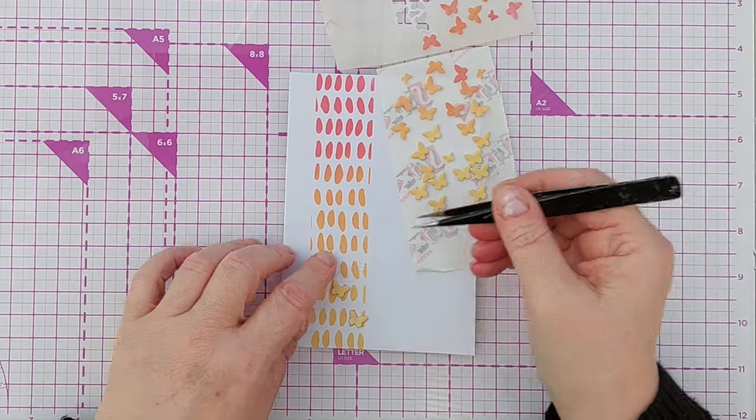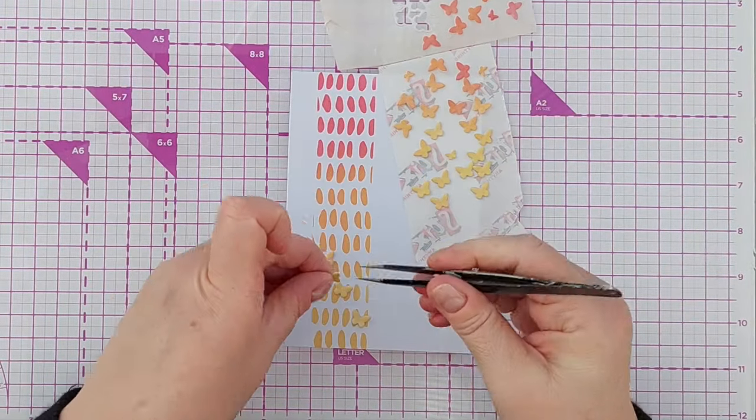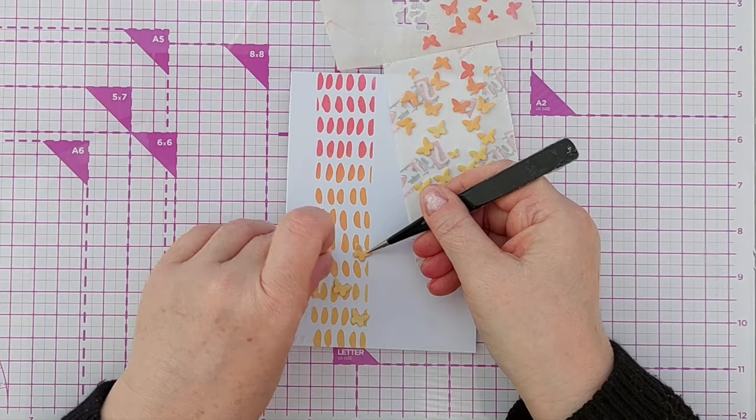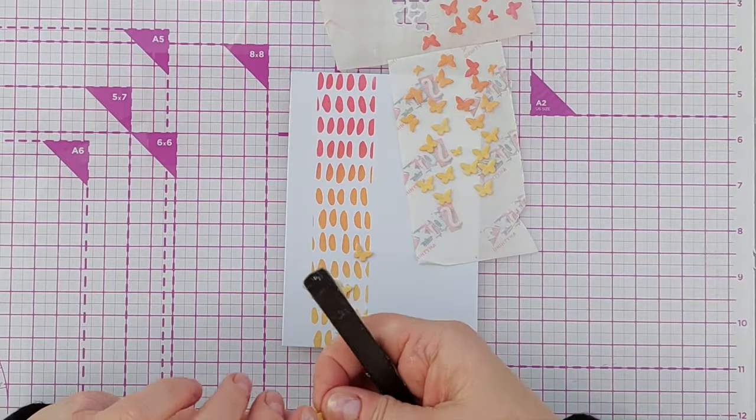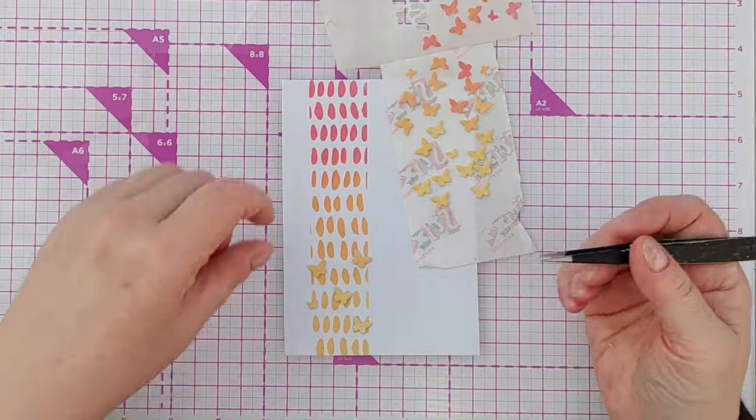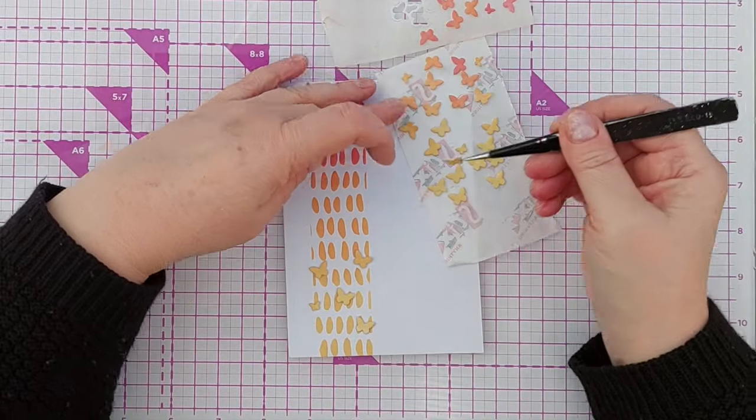So I've got the yellow ones on the yellow bit, the orange ones on the orange bit and the pinky ones on the pinky bit, and any that have got a bit of a blend on I put on the appropriate blendy bit. This is quite a busy strip of color once I get all the butterflies on.